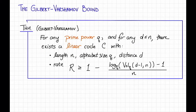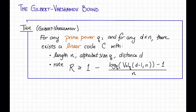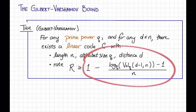Here's the statement of the Gilbert-Varshamov bound. It says that for any prime power q, and for any n and d such that d is less than or equal to n, there exists a linear code C with length n, alphabet size q, distance d, and rate r — recall that's k divided by n — which is at least 1 minus the log base q of the q-ary volume of the Hamming ball of radius d minus 1 in n-dimensional space, minus 1, all divided by n.